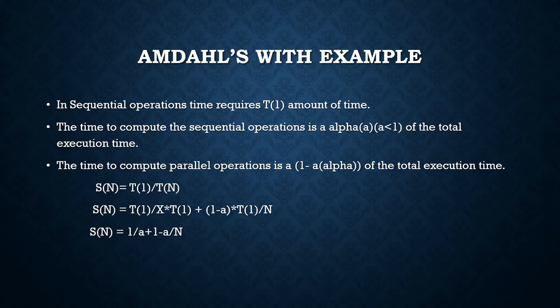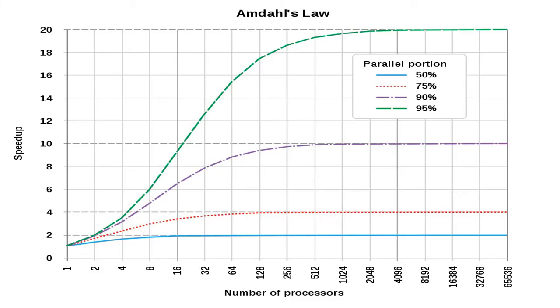By putting various values of alpha and computing the speed-up factor for increasing numbers of processors, we find that S(n) keeps on decreasing with increase in the value of alpha, or the number of sequential operations. Here is the diagram illustrating this. The x-axis shows number of processors from 1 up to around 64, and the y-axis shows speed-up up to 20.